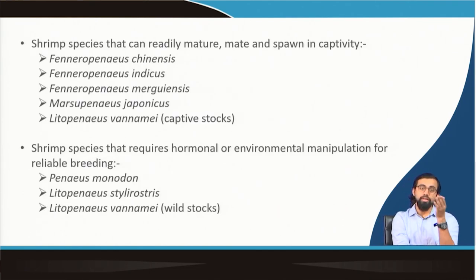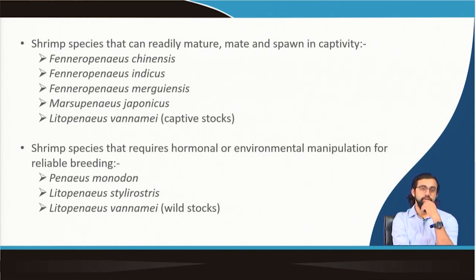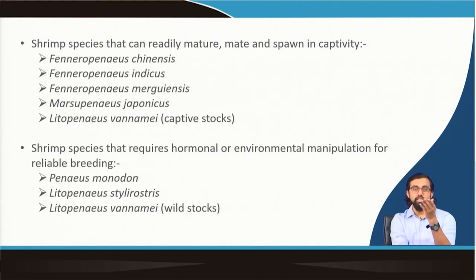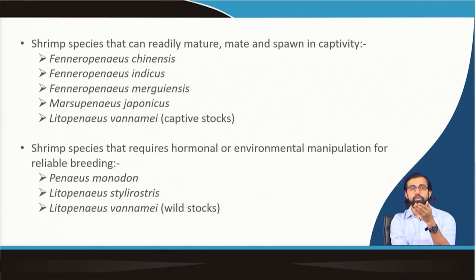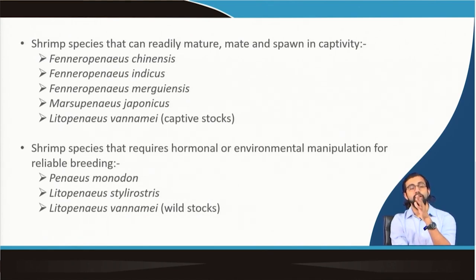Different shrimp species require either hormonal or environmental manipulation for breeding. Some species, like Litopenaeus vannamei and Fenneropenaeus chinensis, can readily mature, mate, and spawn in captivity without such manipulation. However, in the case of Penaeus monodon and wild stocks of Litopenaeus vannamei, hormonal or environmental manipulation is needed for reliable breeding in captivity.